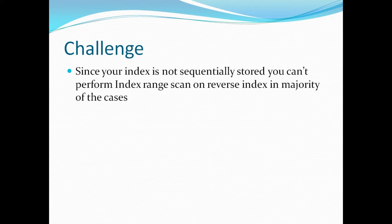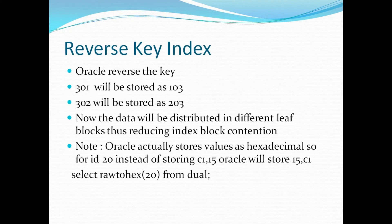Just to do a quick recap: in which case should you go ahead and create a reverse B-tree index? If you have a column in a table with numerically increasing values — for example, order ID in an order table or transaction ID in a transaction table — and you are expecting very many inserts on a regular basis, especially in an Oracle RAC environment, that can lead to index block contention on the rightmost block causing serious performance issues. What you can do is create a reverse key index, which reverses the digits — 301 stored as 103, 302 stored as 203 — so the data is distributed uniformly in different leaf blocks, reducing index block contention. The downside is that since data is not sequentially stored, you cannot do an index range scan.